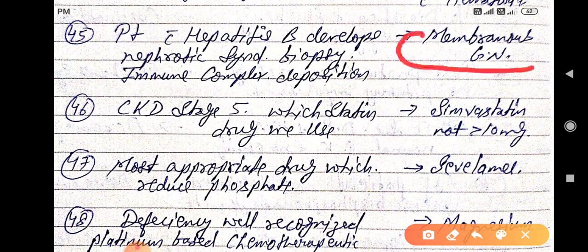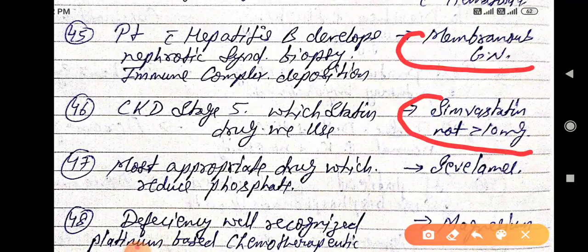CKD stage 5, which statin drug we use? CKD, chronic kidney disease stage 5, which statin drug we can use? Simvastatin, but not more than 10 mg.